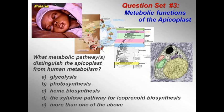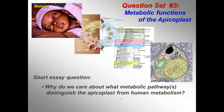And question 3.4 is a short essay question: Why do we care about what metabolic pathways distinguish the apicoplast from human metabolism?